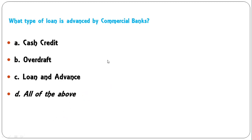What type of loan is advanced by the commercial bank? Options are: cash credit, overdraft, loan and advance, or all of the above? These are all categories of advances made by commercial banks. So D — all of the above — is the correct answer.